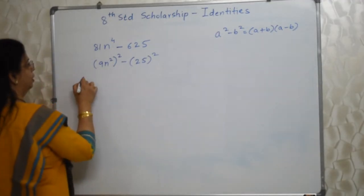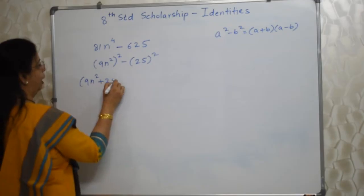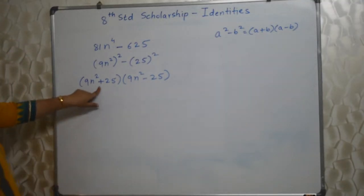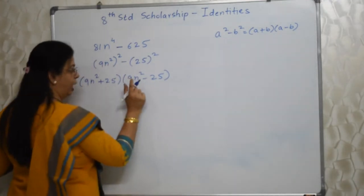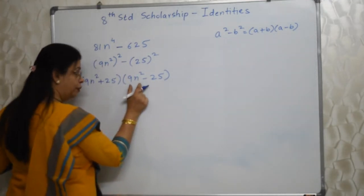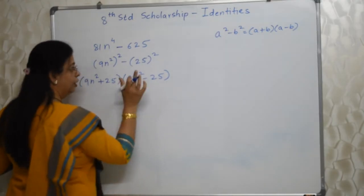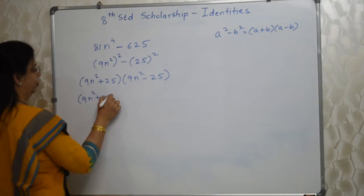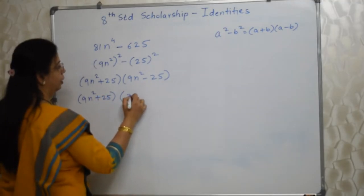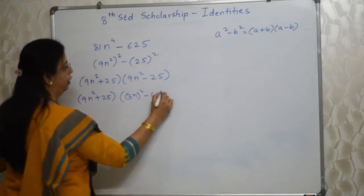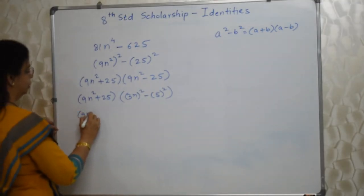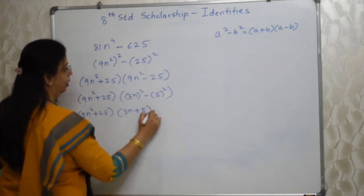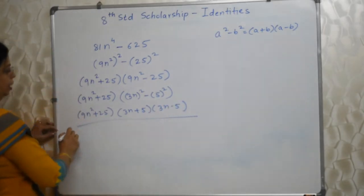The factors are (9n² + 25) and (9n² − 25). The plus term is fine as it is, but whenever there is a minus, check whether each part is still a square of something. 9n² − 25 is (3n)² − 5², so we apply the identity again to get further factors: (3n + 5) and (3n − 5). These are the factors of 9n² − 25.